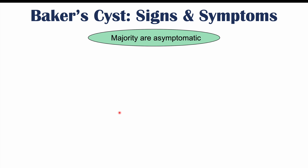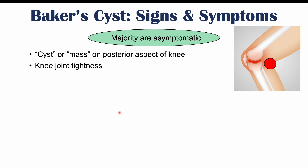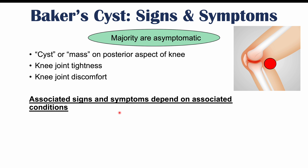Now let's talk about the signs and symptoms of Baker's cysts. The majority are asymptomatic, meaning they have no signs or symptoms. Most cases will simply present with a cyst or mass bulging in the posterior aspect of the knee. In other cases they can be large enough to cause joint tightness, issues with movement of the knee, and joint discomfort.